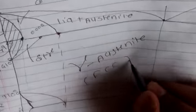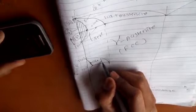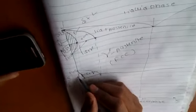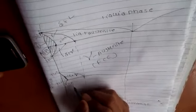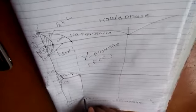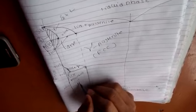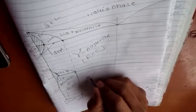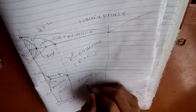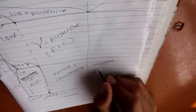...FCC structure. This is alpha plus gamma. This is alpha ferrite. This whole region is pearlite plus austenite alpha ferrite. This is pearlite.